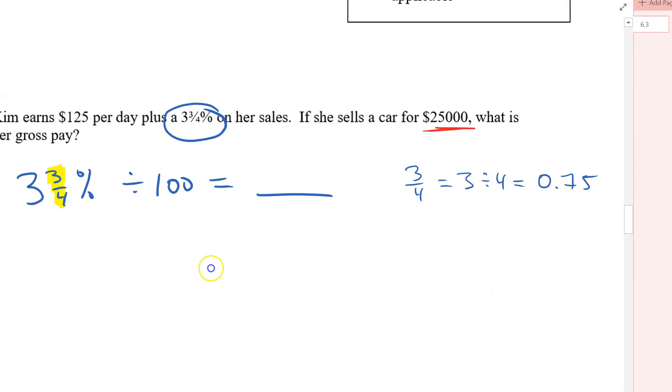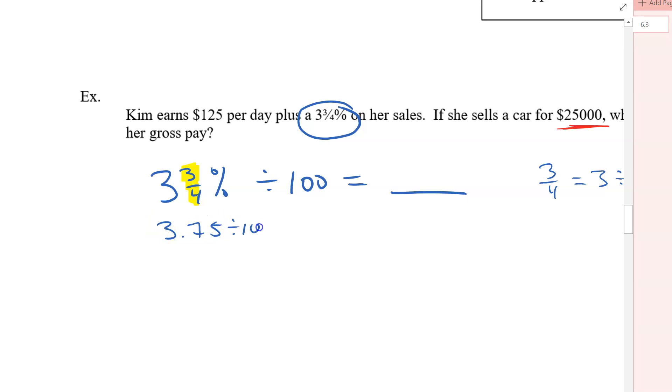So there's our decimal. So then the next thing we want to do is say, okay, $25,000 was the amount of the sales times 0.0375. And we're going to get our commission, which is $937.50. That's the commission.